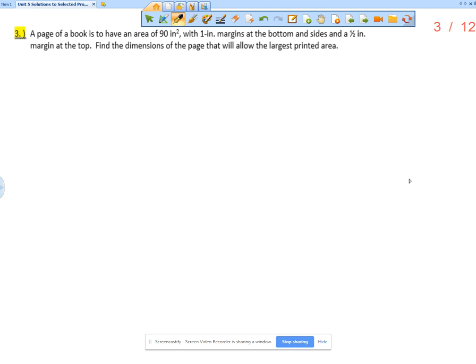A page of a book is to have an area of 90 square inches with one-inch margins at the bottom and sides and a half-inch margin at the top. Find the dimensions of the page that will allow the largest printed area.